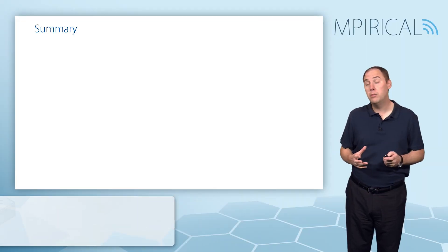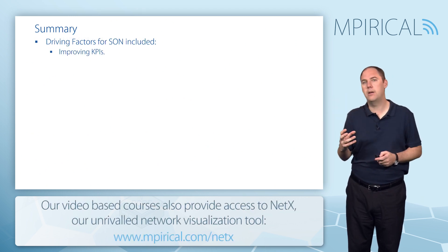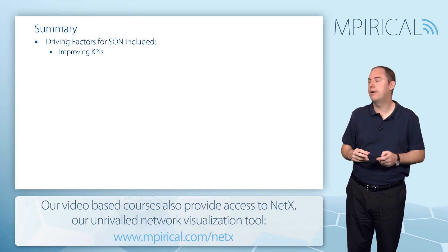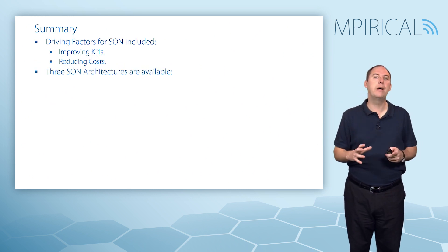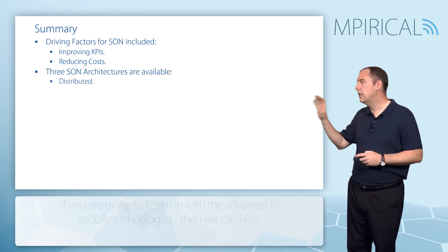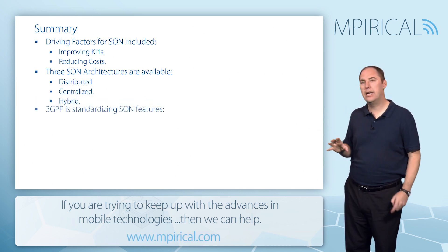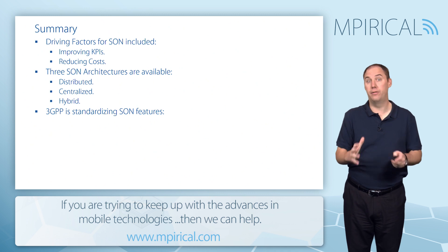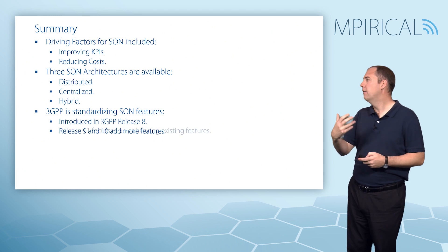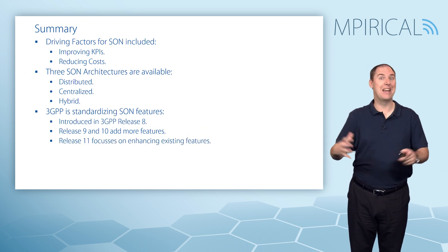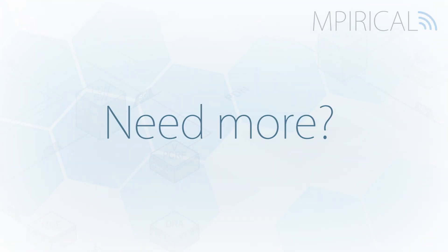In summary, the key driving factors of SON are improving KPIs and reducing costs. There are three architectures: distributed, centralized, and hybrid. Many features have been introduced across 3GPP releases — Release 8, Release 9, Release 10 — and further enhanced in Release 11.